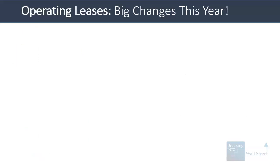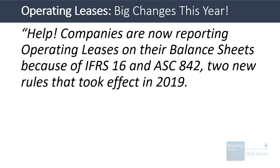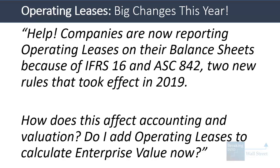The typical question we get goes something like this: companies are now reporting operating leases on their balance sheets because of IFRS 16 and ASC 842, two new accounting rules that took effect in 2019. How does this affect accounting, valuation, and financial statement analysis?